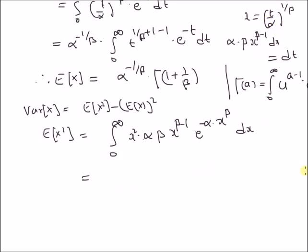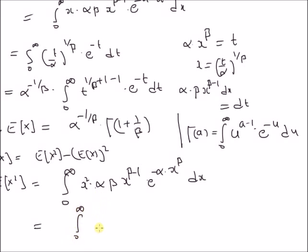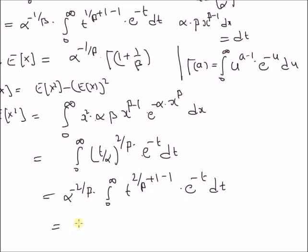Using the same variable transformation — alpha * x^beta = t and alpha * beta * x^(beta - 1) dx = dt — we get the integral from 0 to infinity. For x^2, we substitute (t / alpha)^(2/beta). The term alpha * beta * x^(beta - 1) dx becomes dt, and e^(-alpha * x^beta) becomes e^(-t). Taking the alpha term outside, we have alpha^(-2/beta) * integral from 0 to infinity of t^((2/beta + 1) - 1) * e^(-t) dt, which is a gamma function with parameter (1 + 2/beta). So E[x^2] = alpha^(-2/beta) * Gamma(1 + 2/beta).